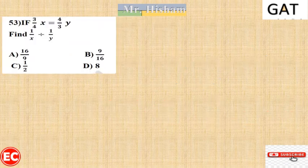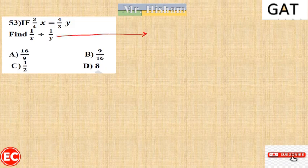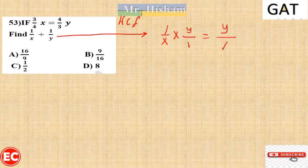Question 53: If 3/(4x) equals 4/(3y), find the value of (1/x) divided by (1/y). Using keep-change-flip on the division, 1/x divided by 1/y becomes y/x. So we need to find the ratio y over x from the given equation.